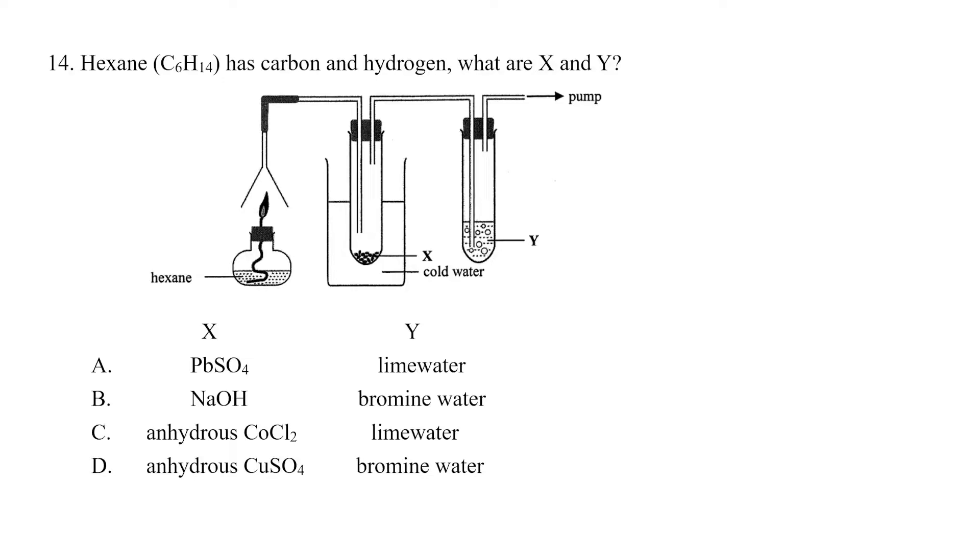2020 question 14: Hexane has carbon and hydrogen, what are X and Y? This is a typical example of a question where it looks complicated but indeed is actually very simple.